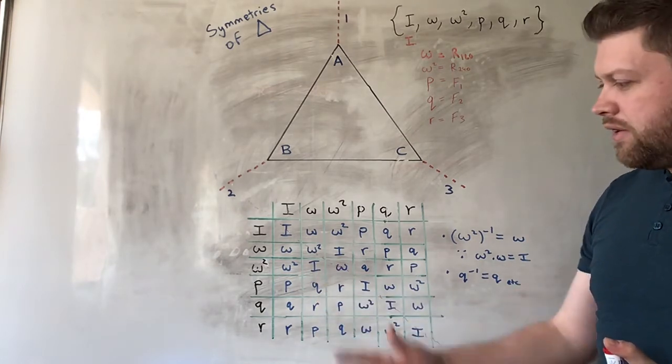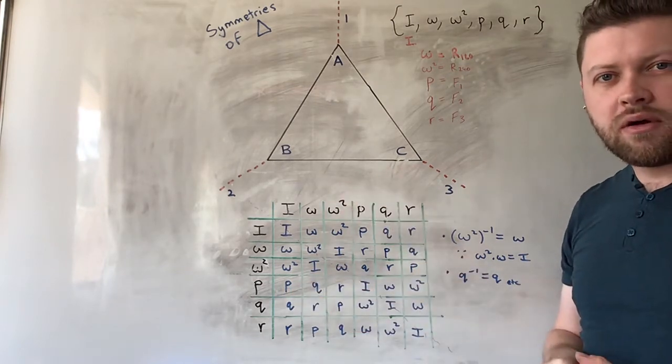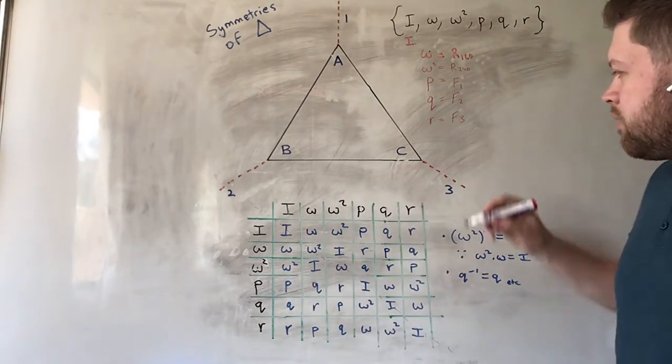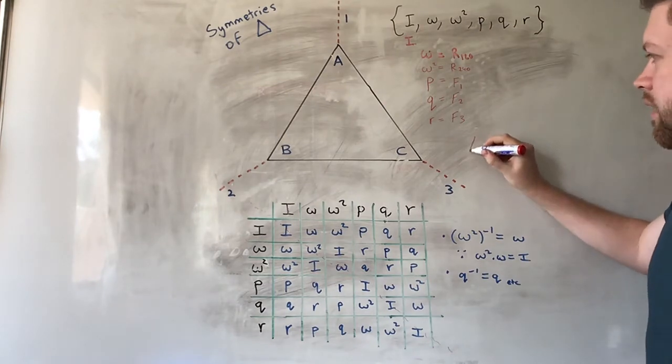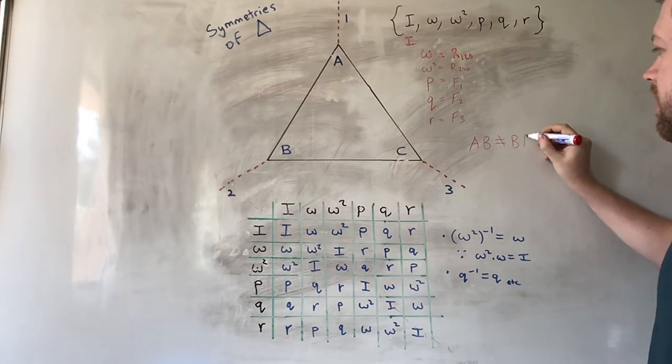You'll notice that it's not symmetric. The bottom half is not reproduced exactly in the top half. So that means that AB does not necessarily give you BA.